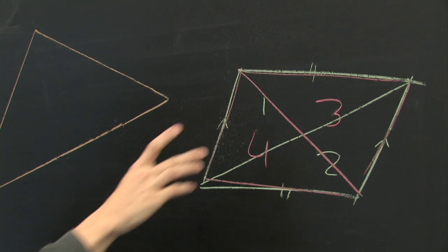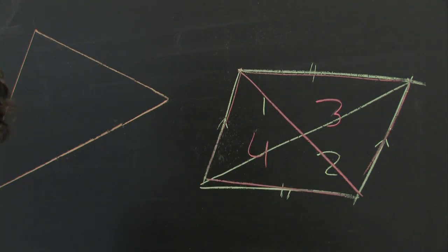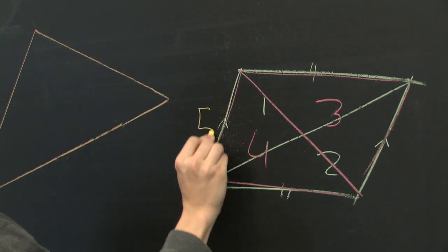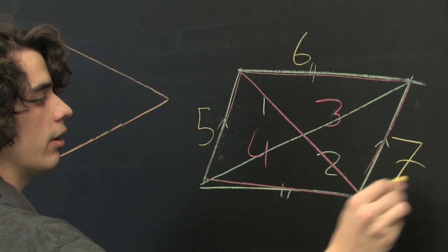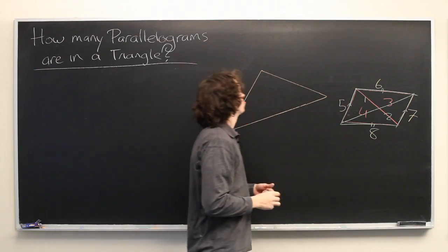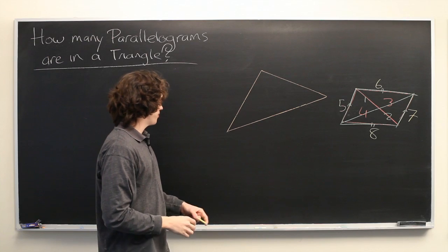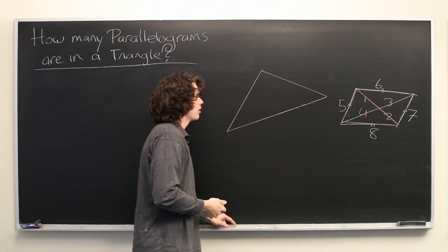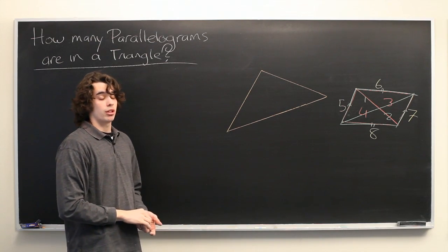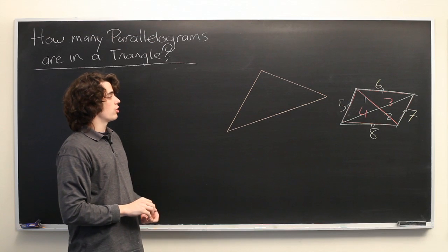But then you also get these smaller triangles in here. We'll call them five, six, seven, eight. So you could say that you can fit eight different triangles into a parallelogram, but that's not what we're asked. We're asked for how many parallelograms can fit in a triangle. Using this definition, there's zero.